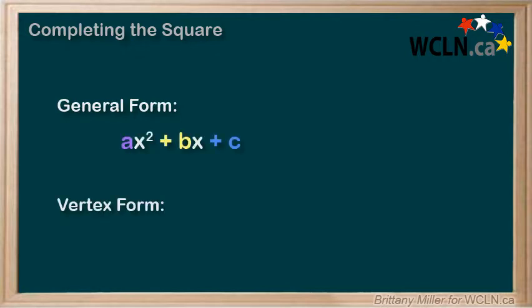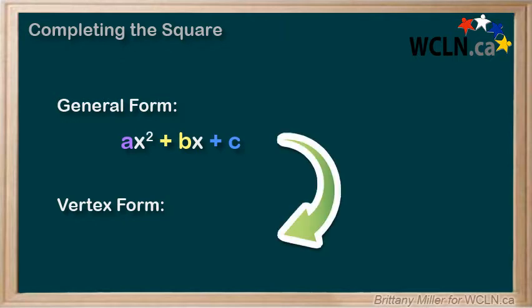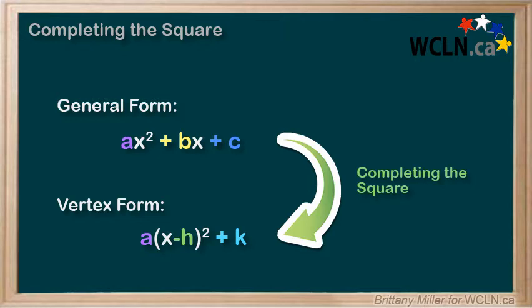That means we have ax squared plus bx plus c and we want it to look like a times x minus h squared plus k. This is a process called completing the square and it goes like this.